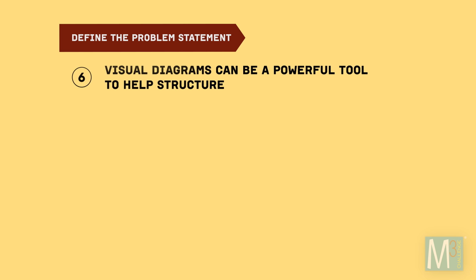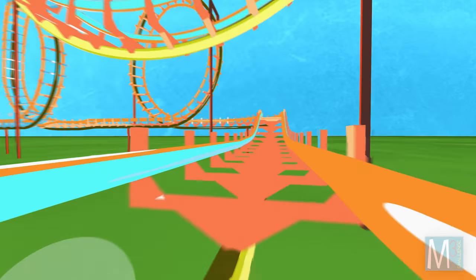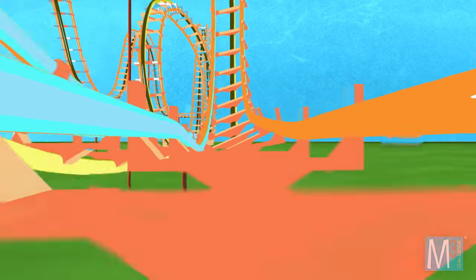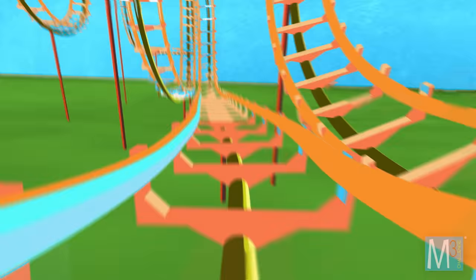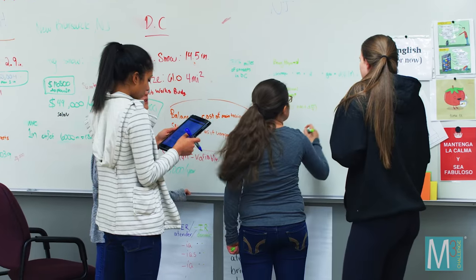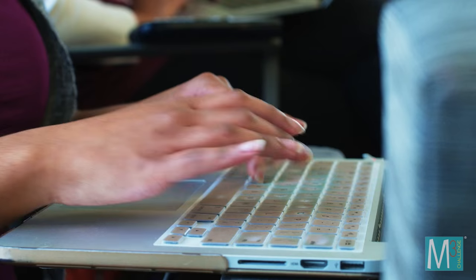Visual diagrams can be a powerful tool to help structure your model in upcoming steps. Keep an open mind — you can prune out unrealistic or useless information later. The math modeling process contains all the ups and downs of your favorite roller coaster. Defining the problem up front will help you focus on the next steps in the process. So sit down, put on your thinking cap, and enjoy the experience.